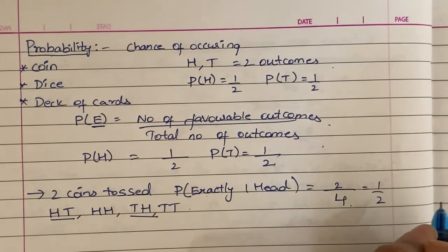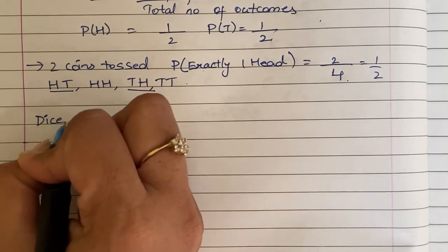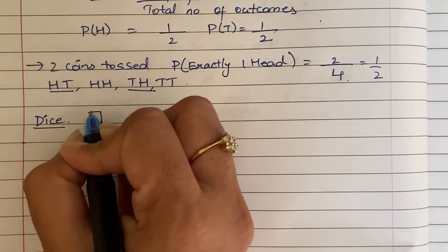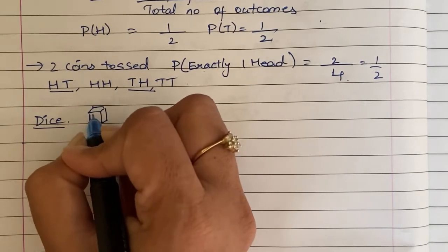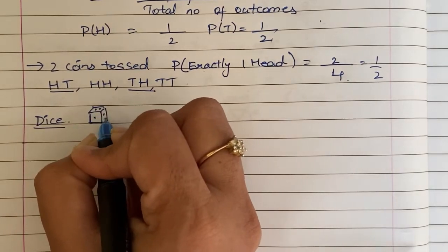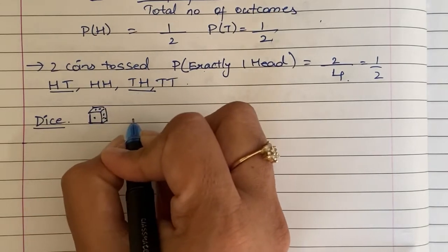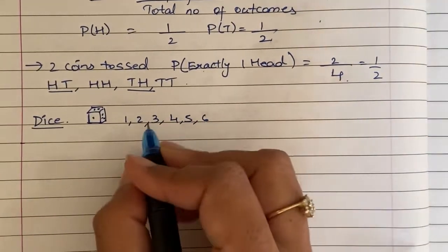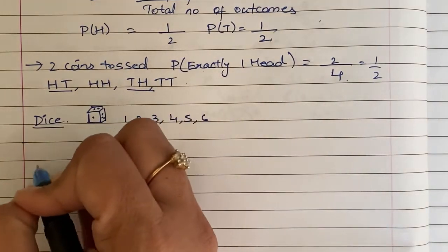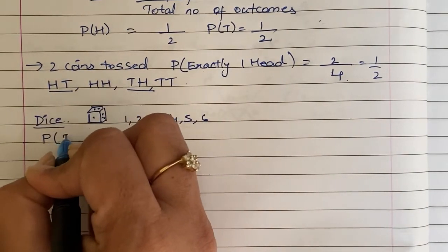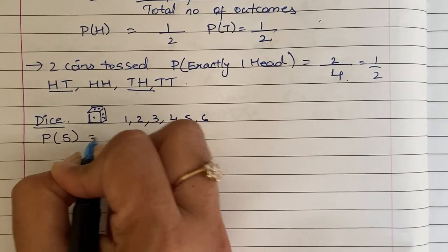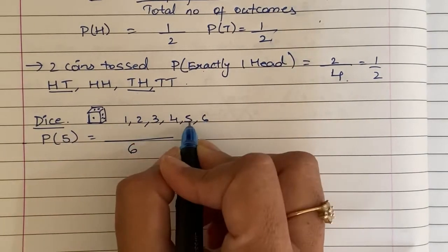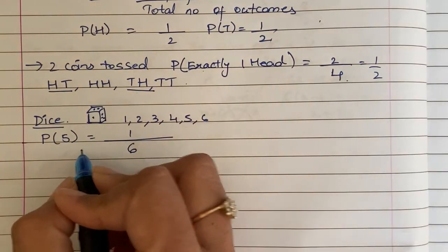Next is the dice. A die is used in snake and ladder or other ludo games. It is a cubicle shape with six faces, each face marked by dots from one to six. So there are six faces with six numbers. What is the probability of getting a 5? The total number of outcomes is 6, and the favorable outcome is one, so the probability of getting 5 is 1 by 6.